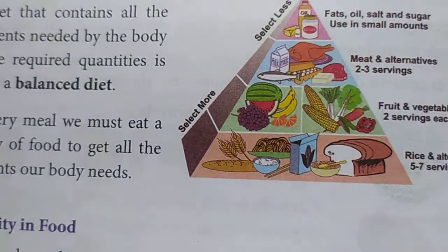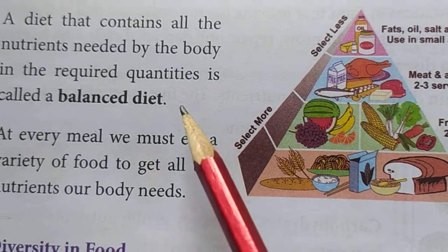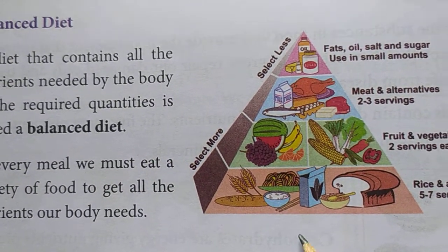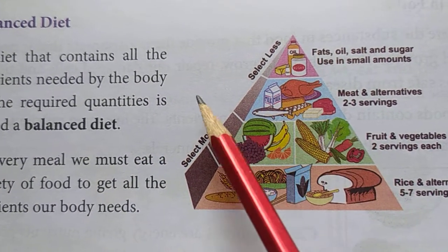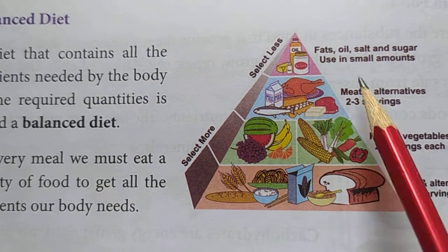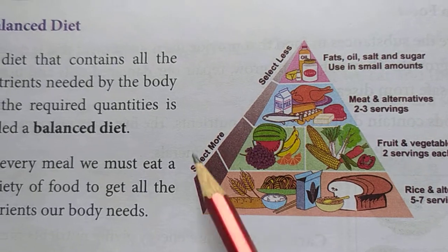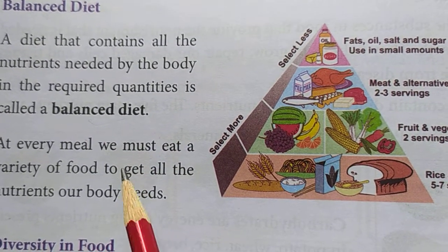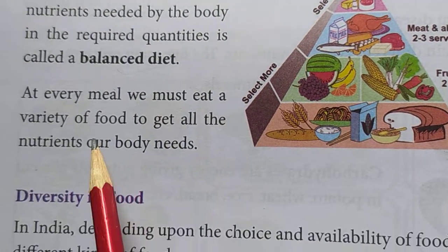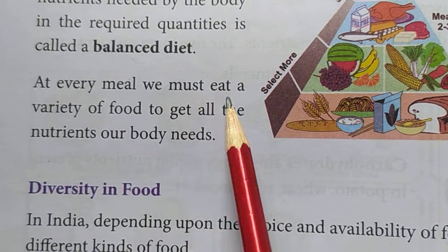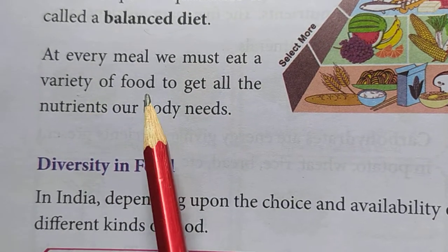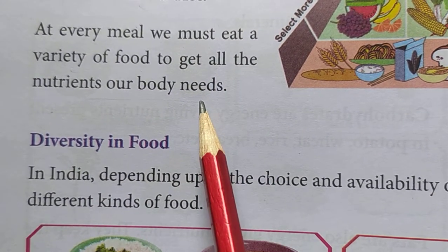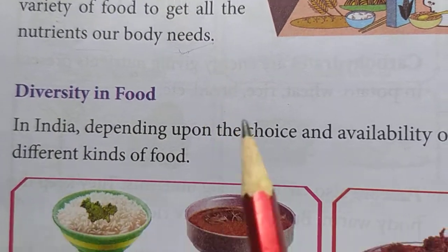Now about the balanced diet. What is a balanced diet? The food we eat should contain all types of nutrients — then that food is called a balanced diet. At every meal, we must eat a variety of food to get all the nutrients our body needs.